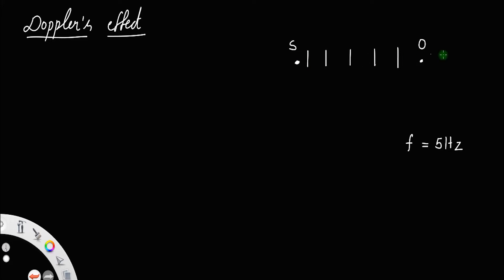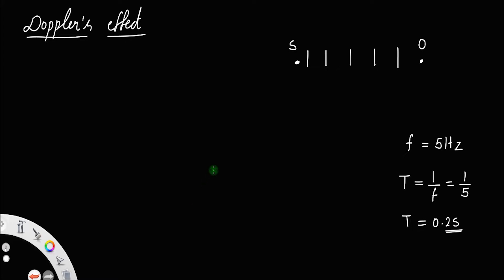The waves from the source clearly reach the observer. This also means that the time period T is equal to the reciprocal of frequency, that is 1 by 5, which equals 0.2 seconds. This means after every 0.2 seconds, the observer receives a wave. So the real frequency equals 5 hertz and the apparent frequency — the frequency received by the observer — is also 5 hertz, because the observer is not moving.